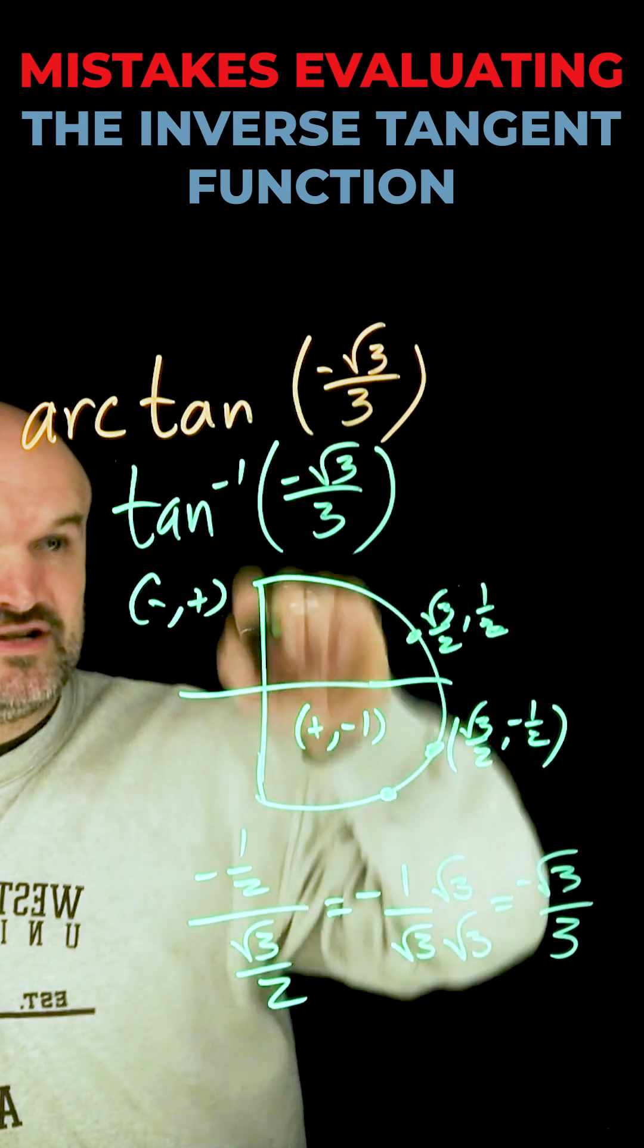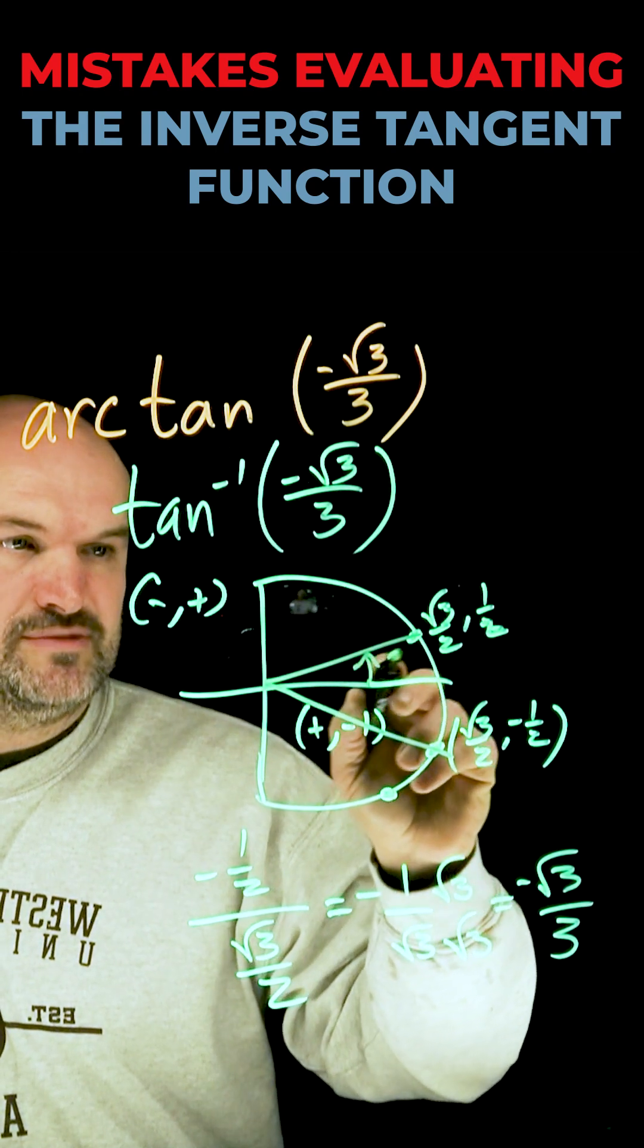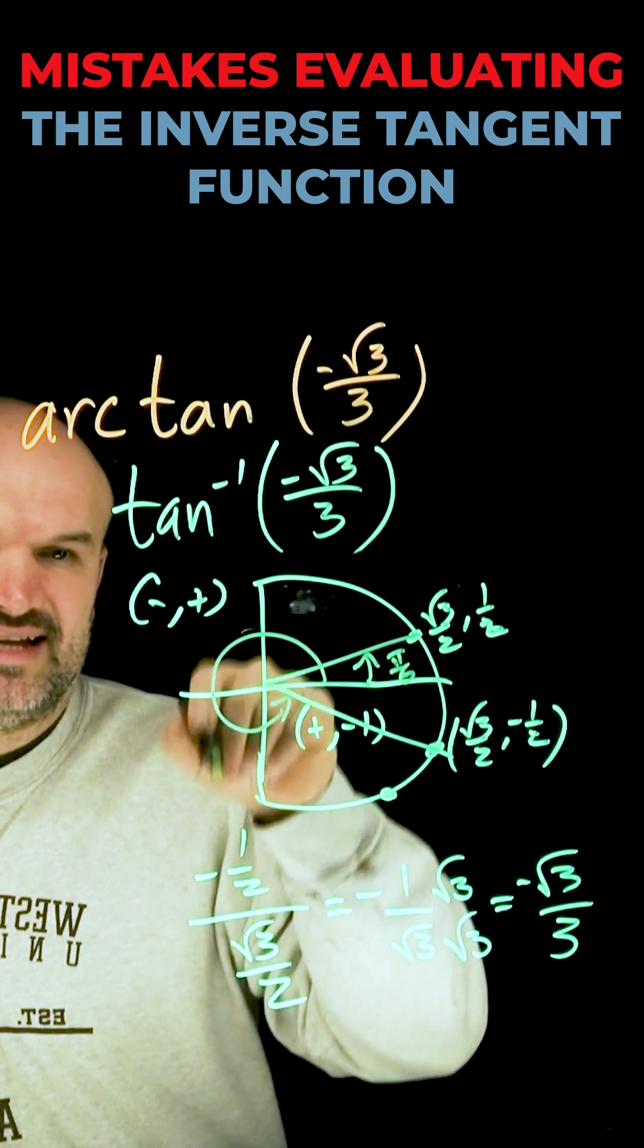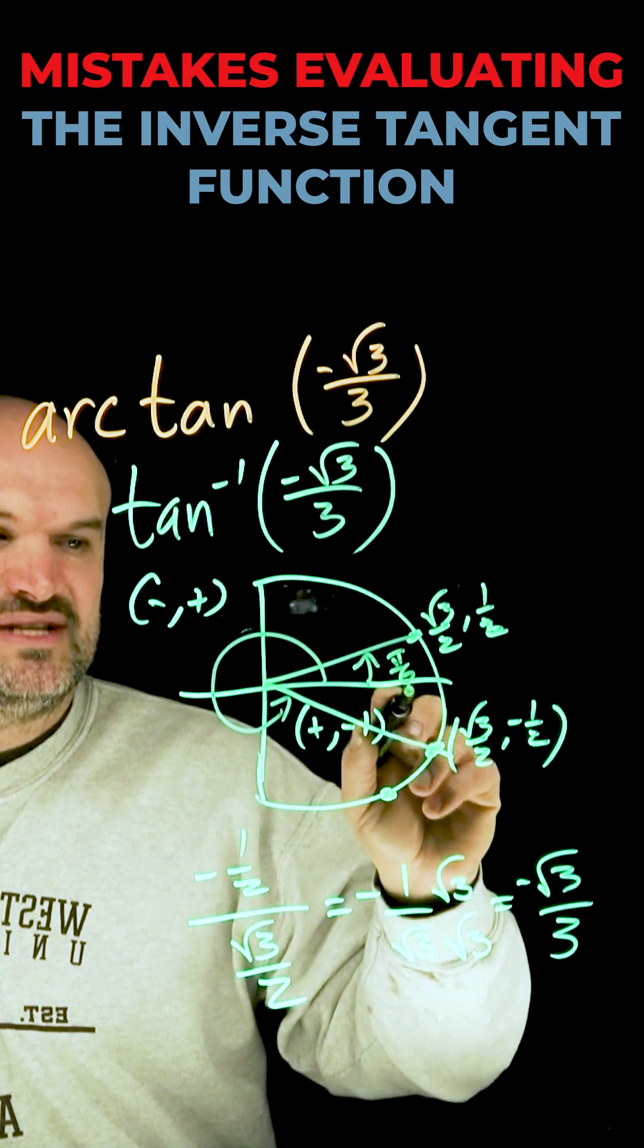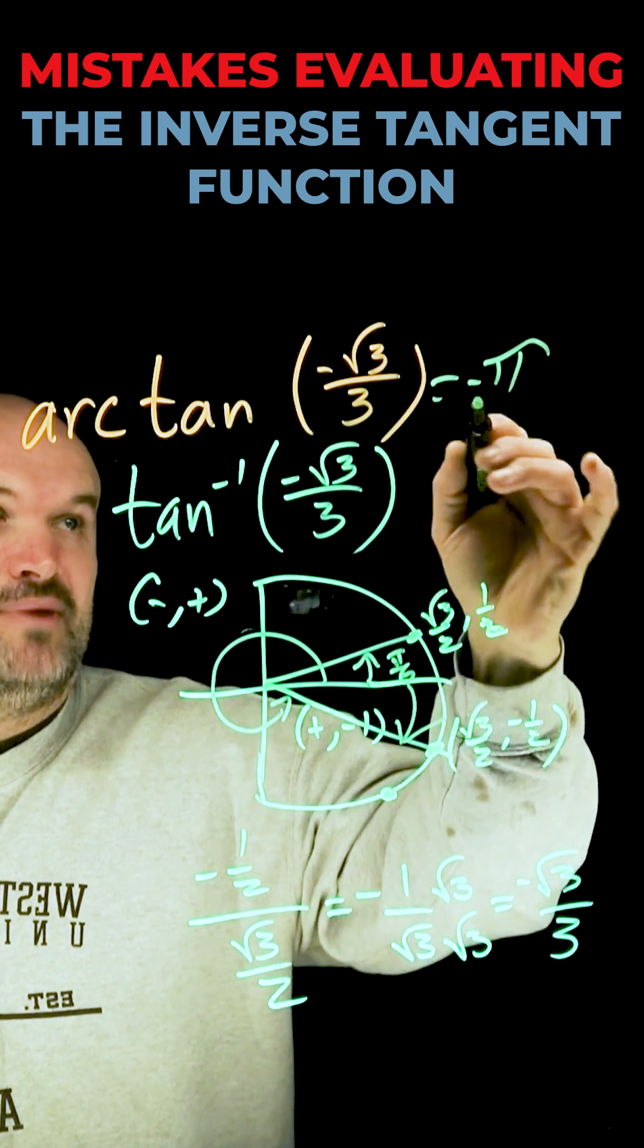So we found our ratio. Now we need to understand, well, what exactly is that angle? This angle over here is going to be pi over 6. But I can't go all the way around here because then that would get out of my restriction. So I have to use the negative version of that angle, which is going to be negative pi over 6.